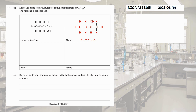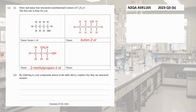I could put an OH off the next carbon, but remember we always name from the side that gives the functional group its lowest number — so that would still be butan-2-ol, not a new isomer. If I put the OH on the far left carbon it's just butan-1-ol again, reflected. So I need to think differently: let's try three carbons in a row with one carbon branching off the middle. Putting the OH off a primary carbon gives 2-methylpropan-1-ol.